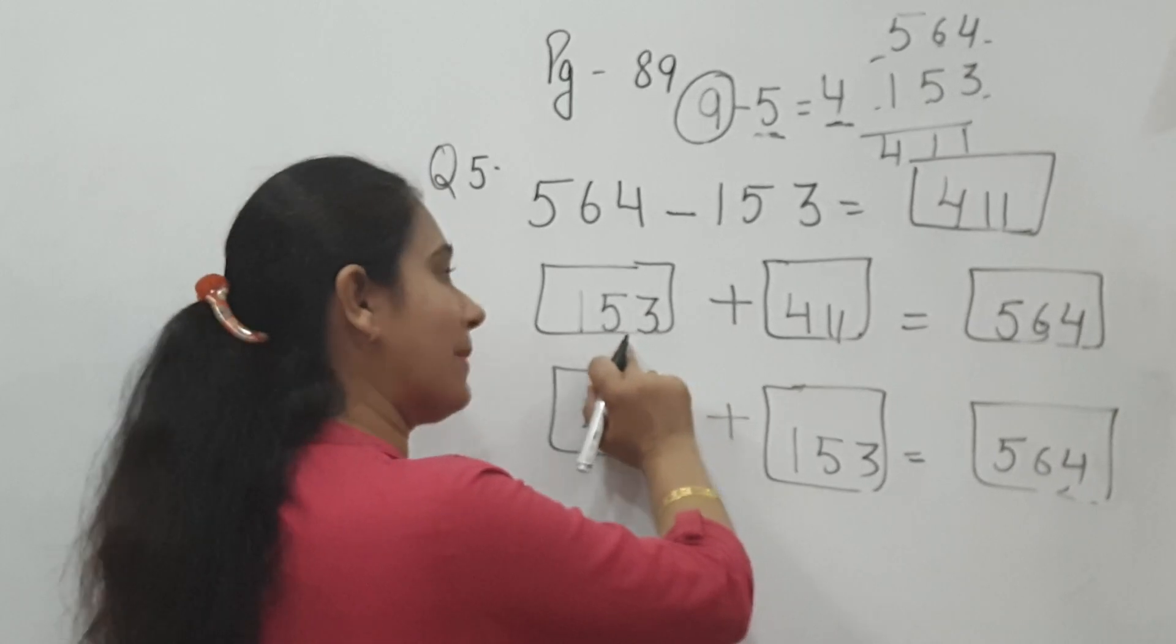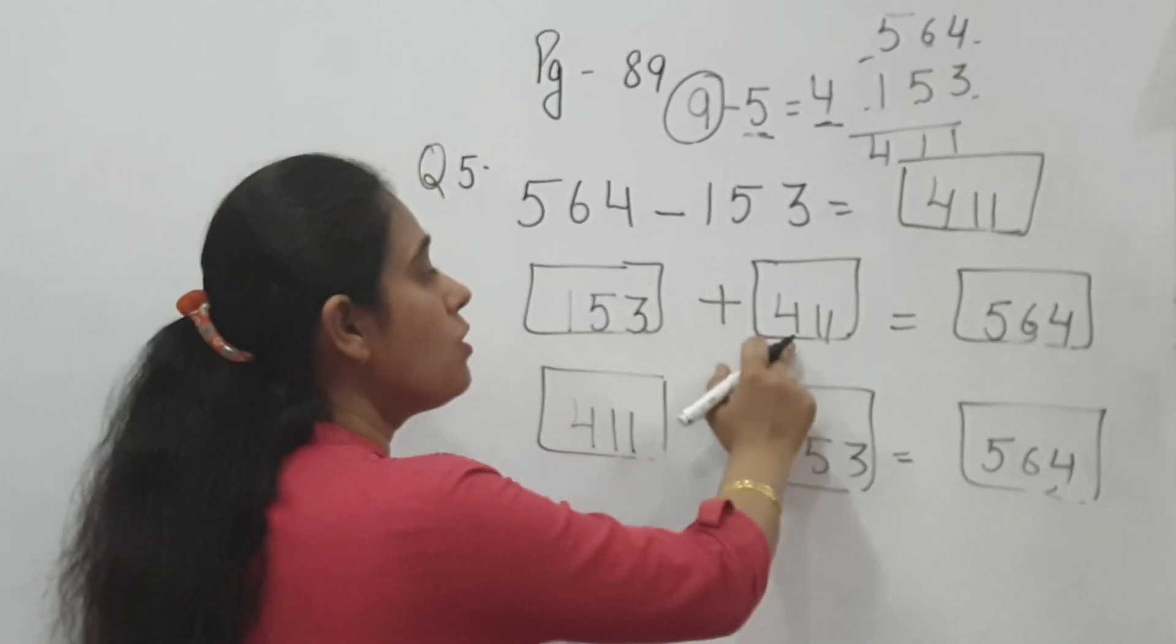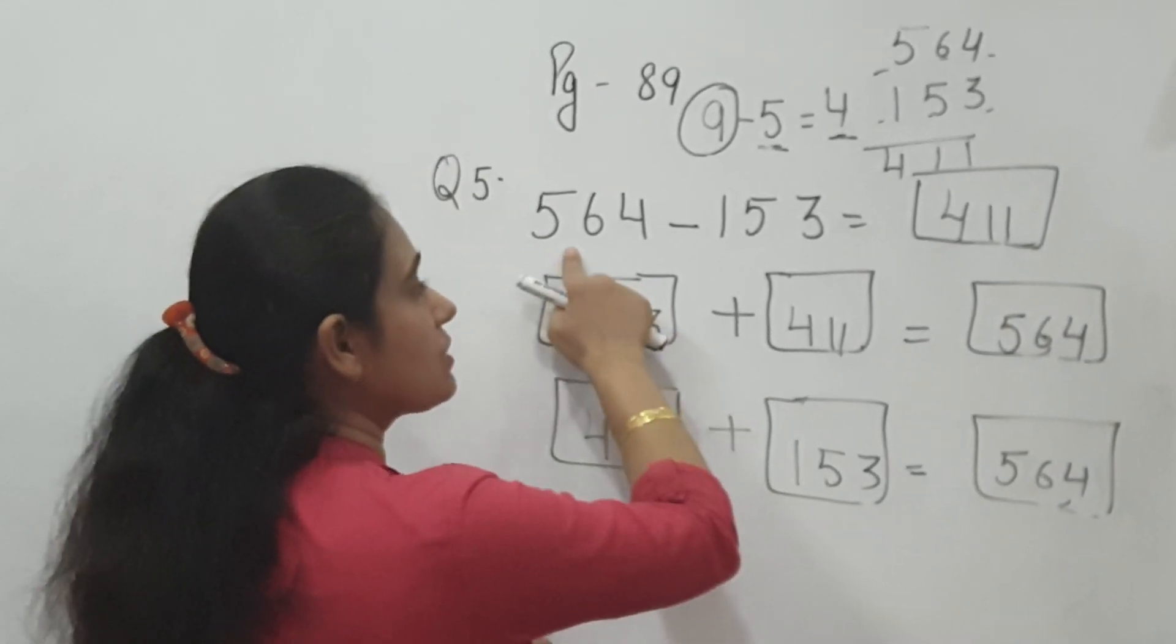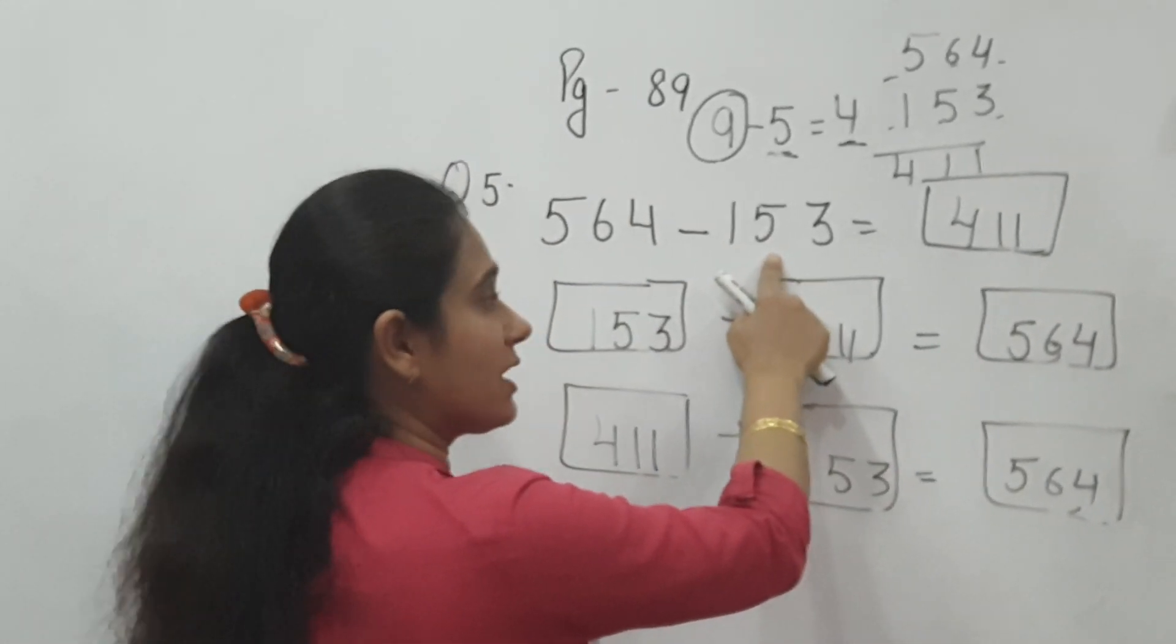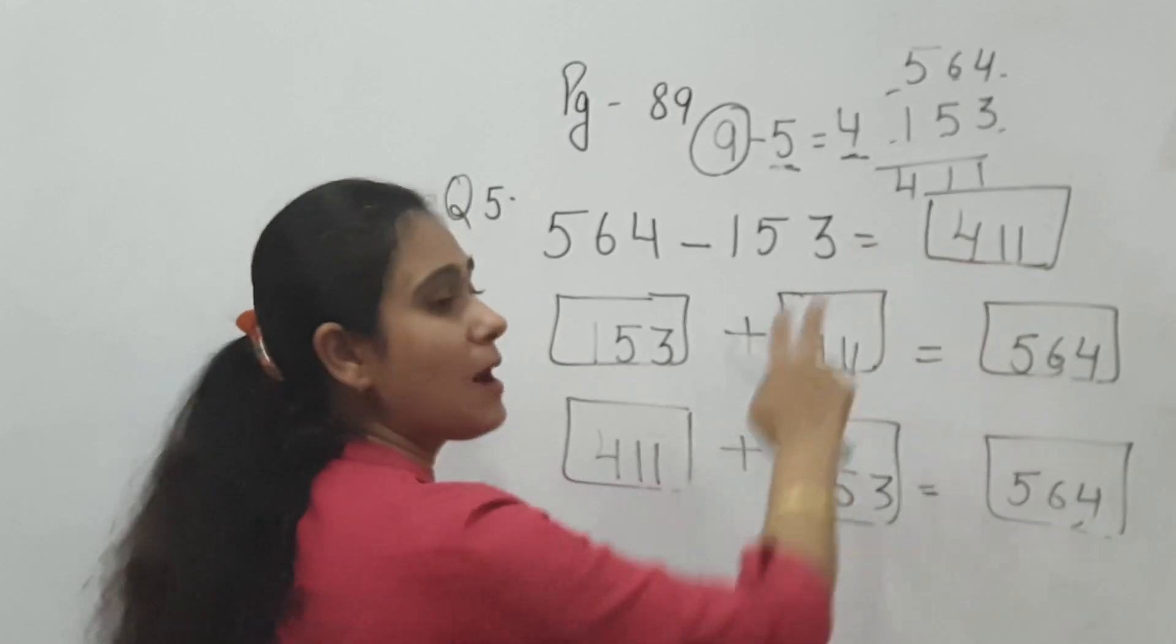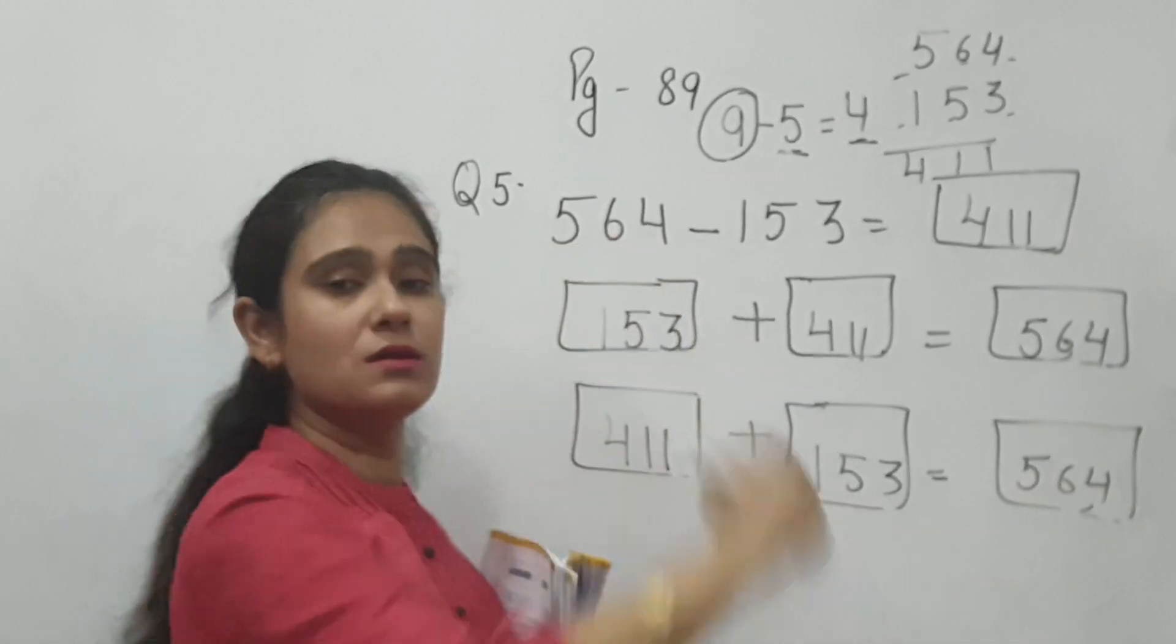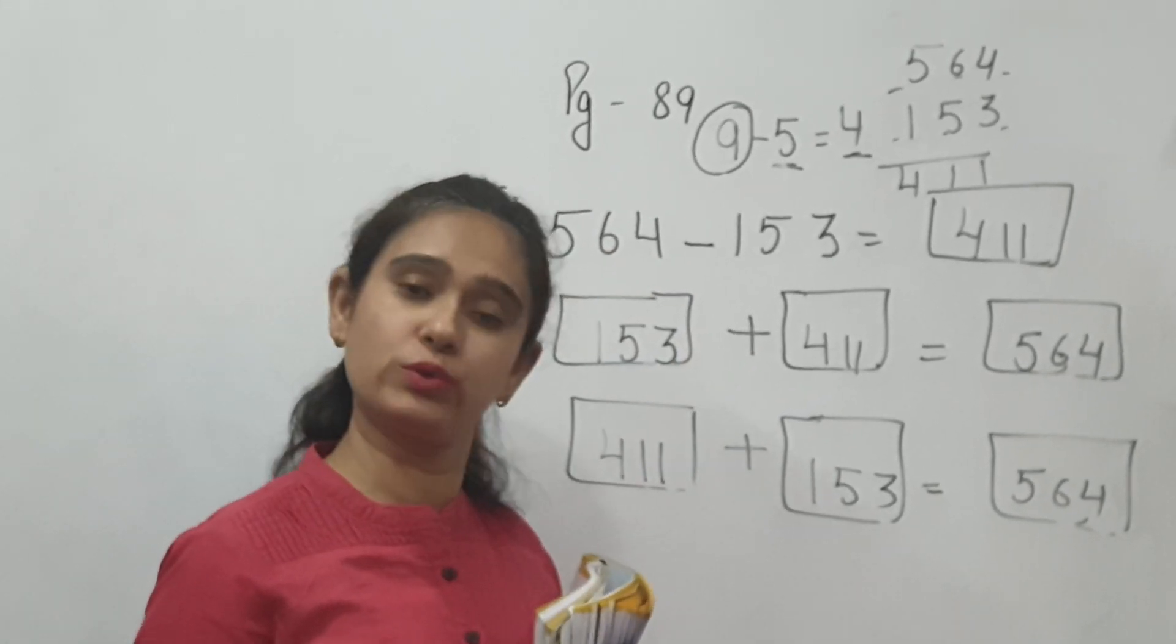You can write 153 first or 411 first. It means if you cut something from this and the answer you get, if you plus those two, then your answer will be the total that was there.